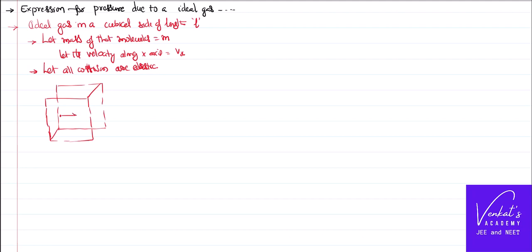Consider a gas molecule moving with velocity Vx and mass M inside a cube of length L. This gas molecule collides with a wall and comes back — being an elastic collision, it returns with the same velocity Vx. Therefore we can find the force acting on the gas molecule.